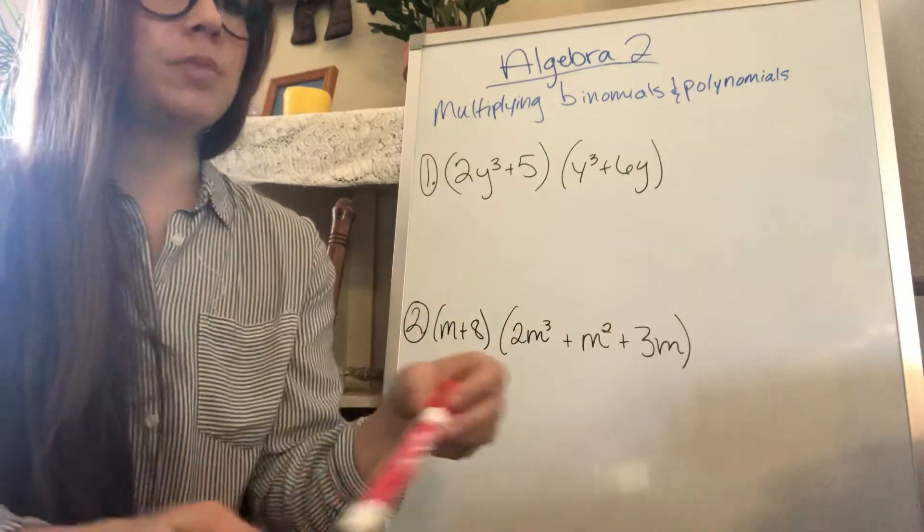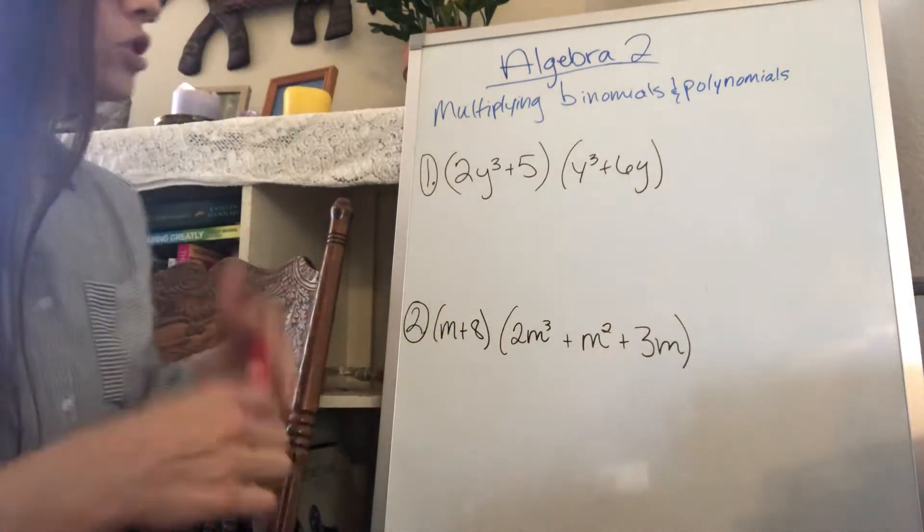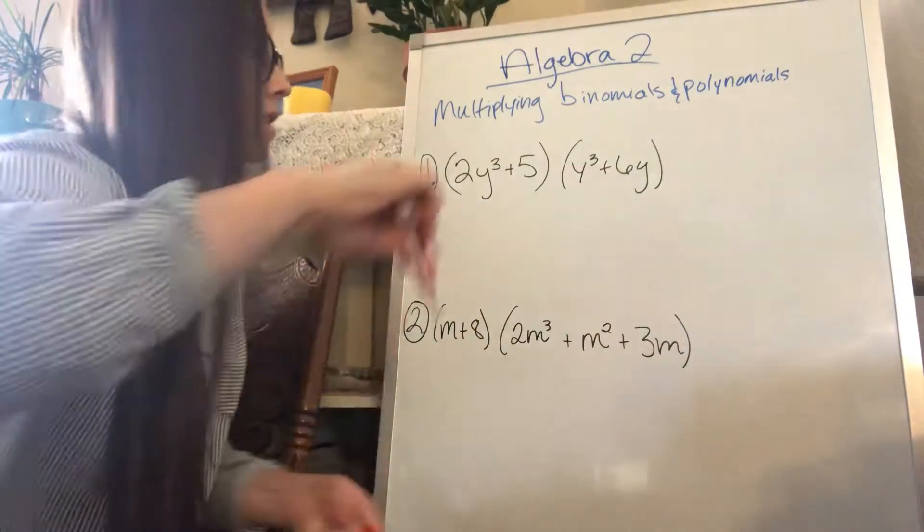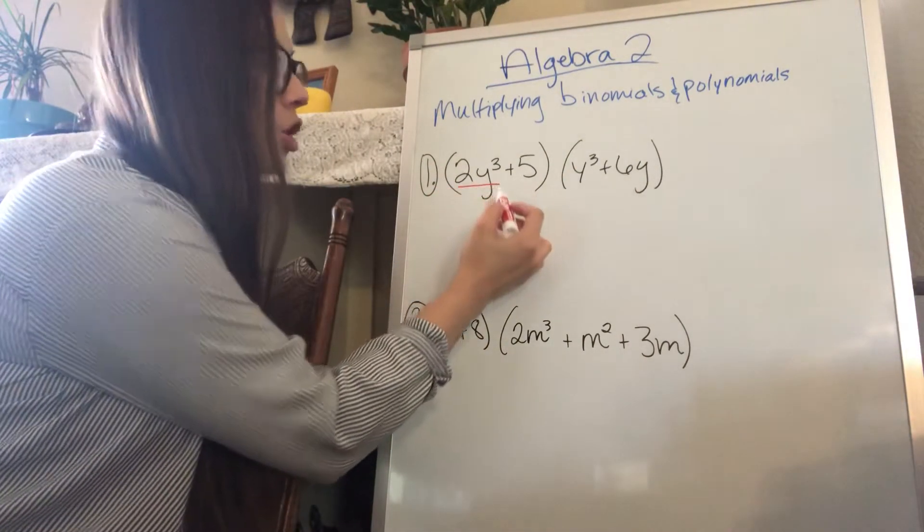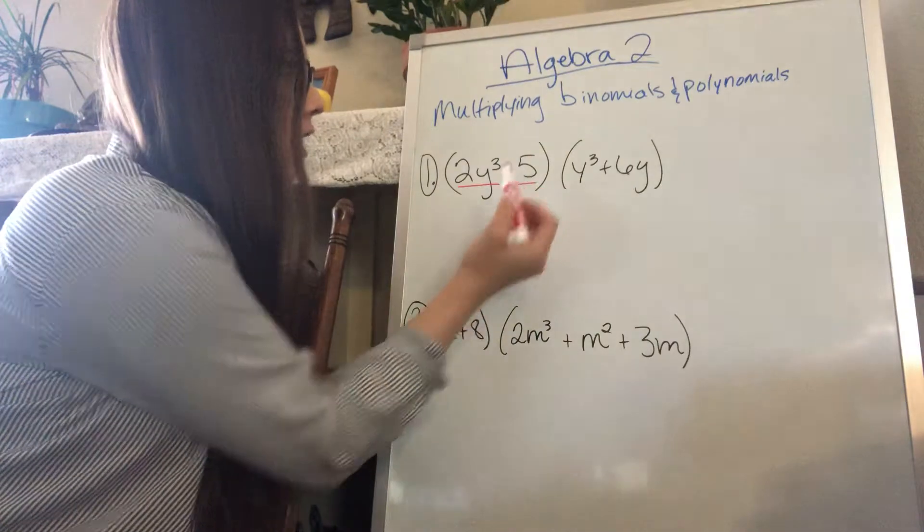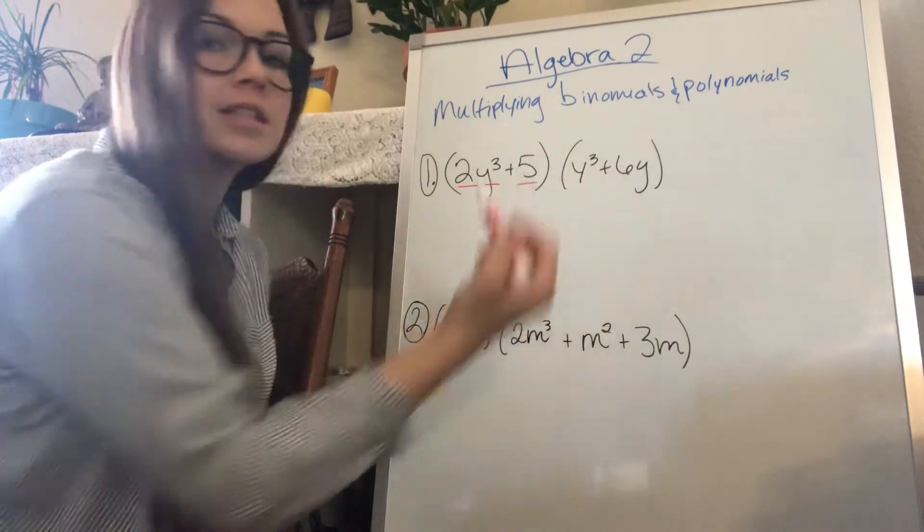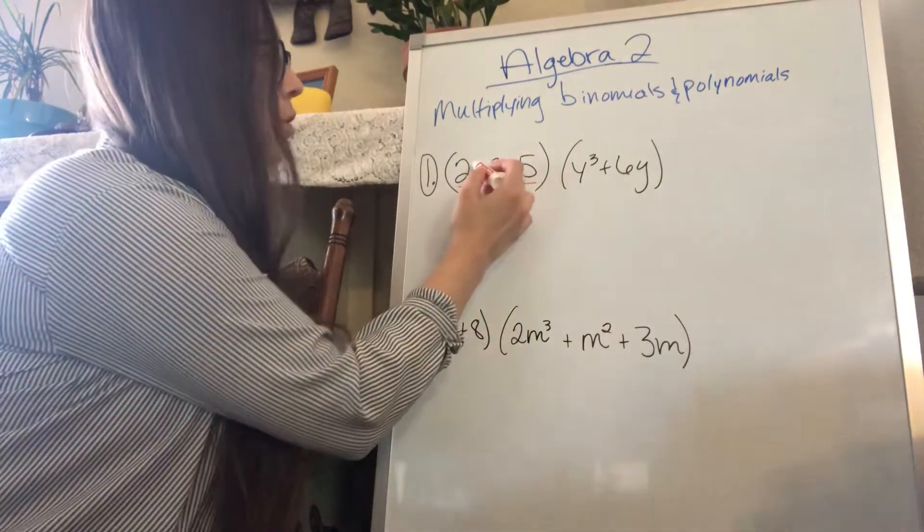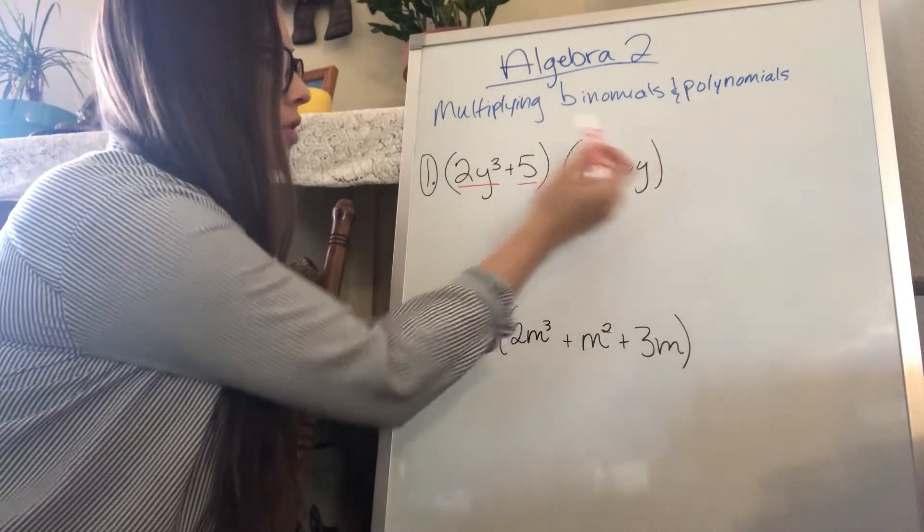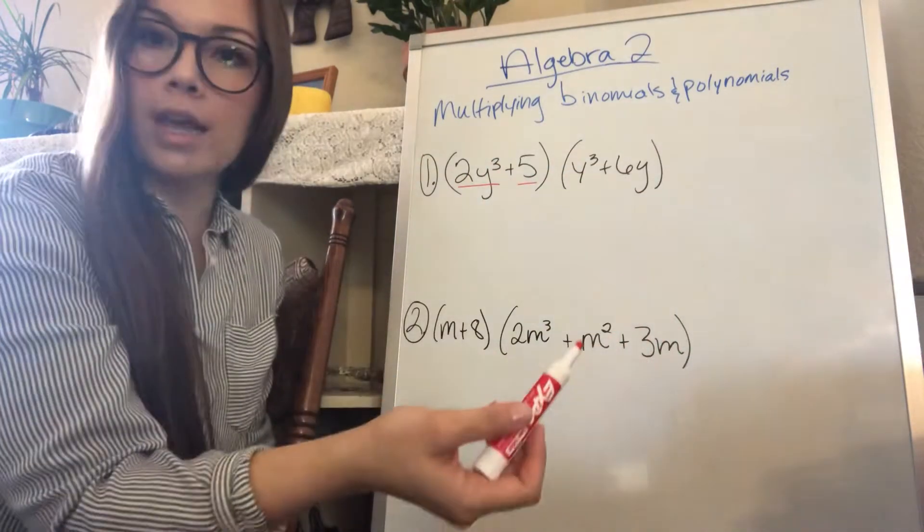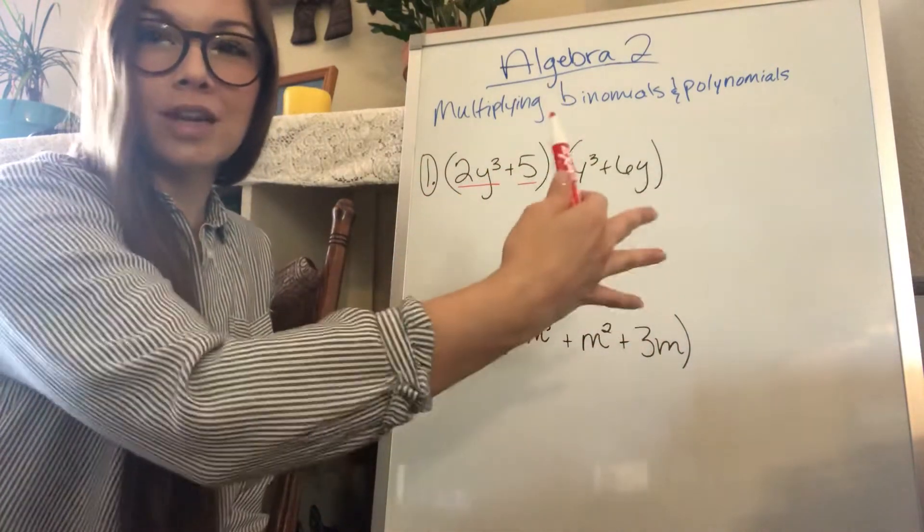So that basically just means that we need to distribute both of these terms, the 2y cubed and the 5 to the y cubed and the 6y. We multiply the 2y cubed by both and then we multiply the 5 by both. It's just distributing but a little bit extended version of distributing.